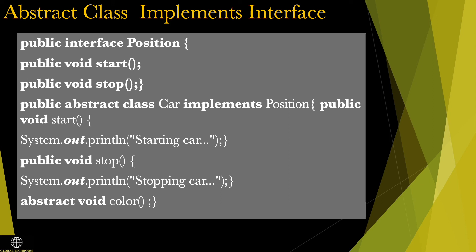We can go through another example of an abstract class which implements an interface. In the interface, there are two methods defined: start and stop. An abstract class implements the position interface. In the abstract class we have to implement both the methods defined in the interface, and it should also include an additional abstract method like color in the abstract class.